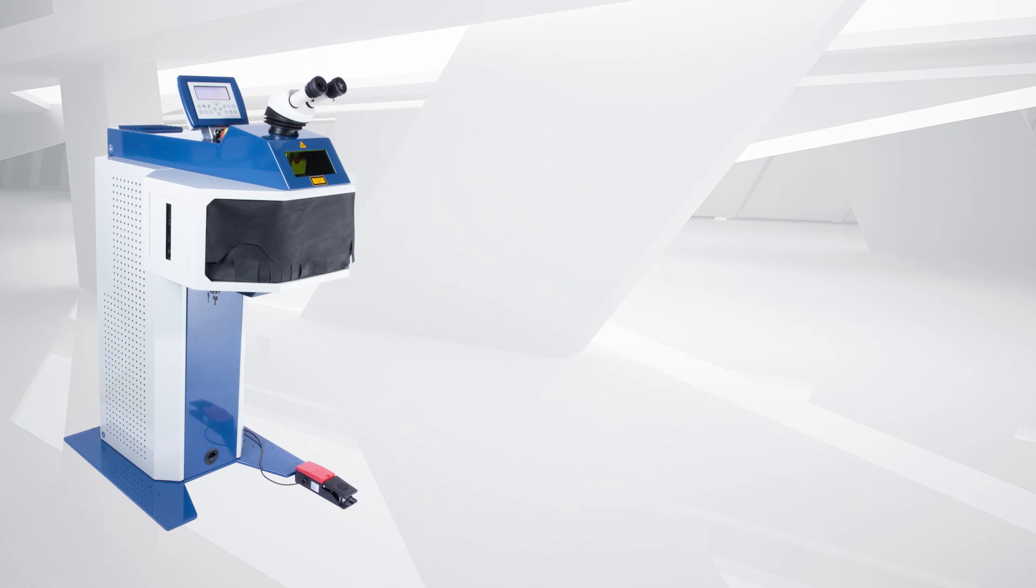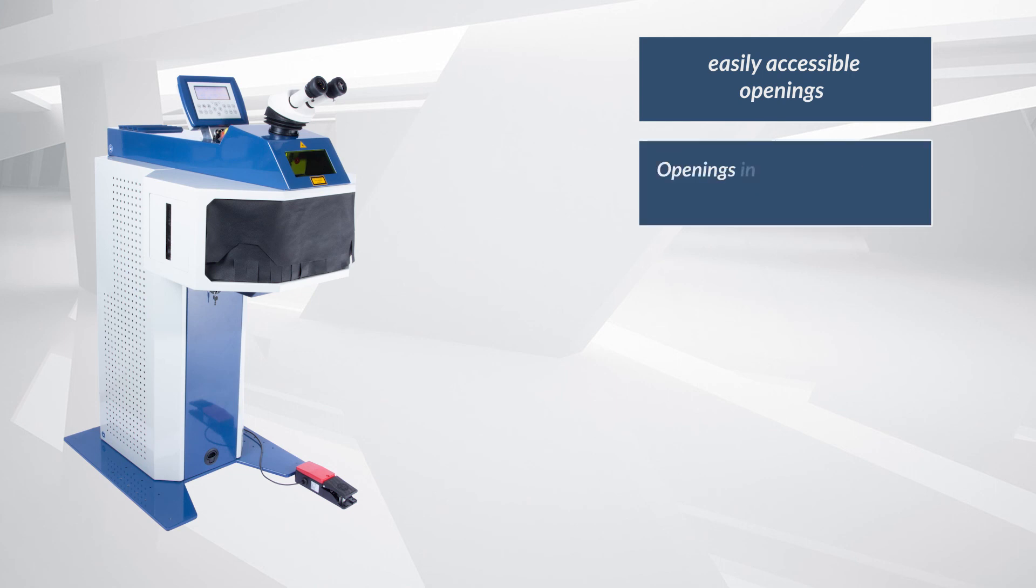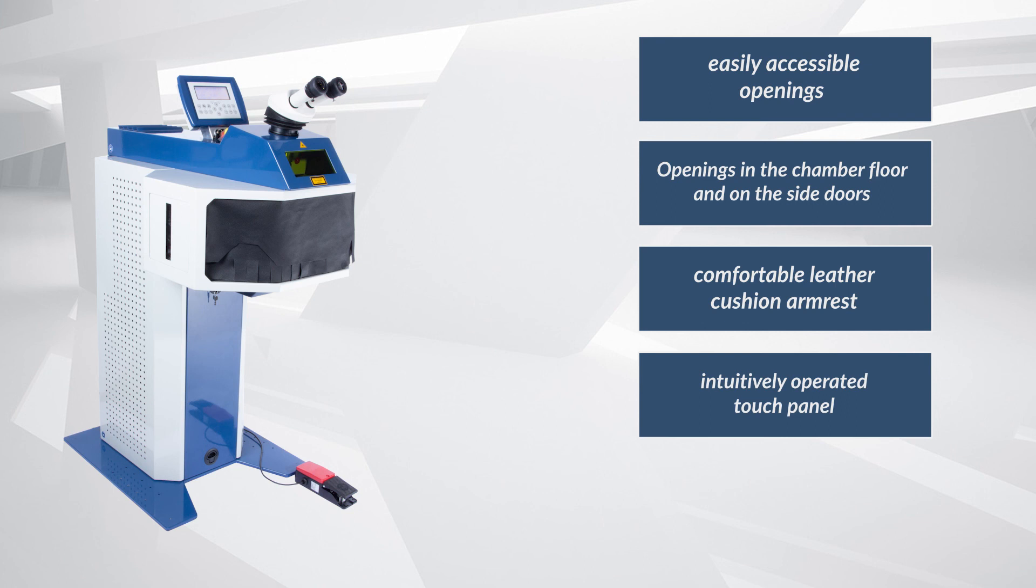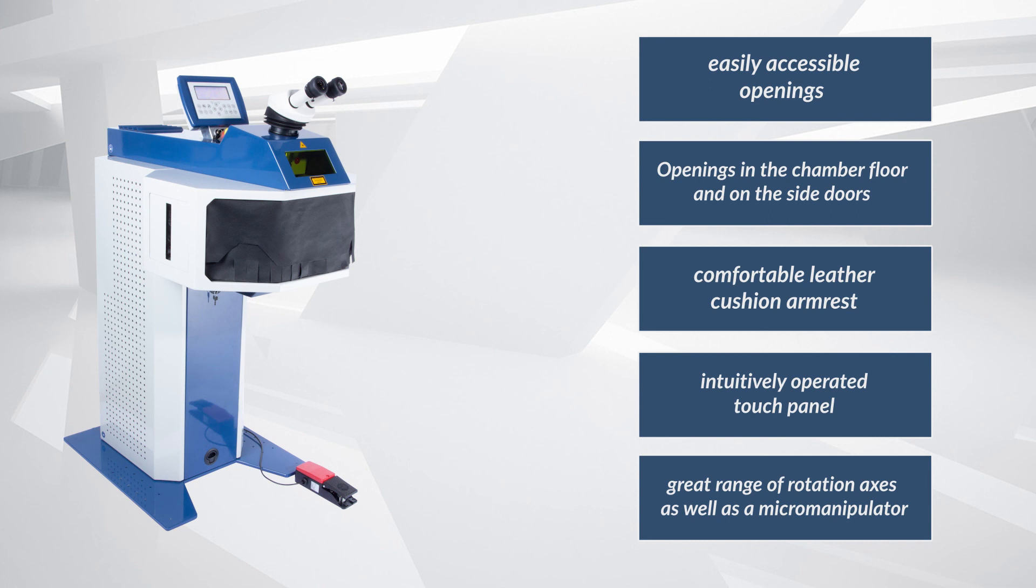Let us summarize some of the ALO features: easily accessible openings that still ensure laser safety, openings in the chamber floor and on the side doors to insert long components, a comfortable leather cushion armrest, an intuitively operated touch panel, great range of different rotation axes available, as well as a micromanipulator for easy and exact positioning.